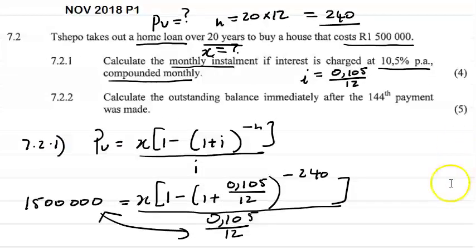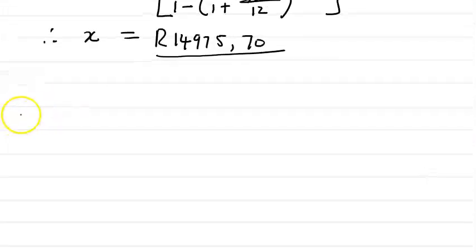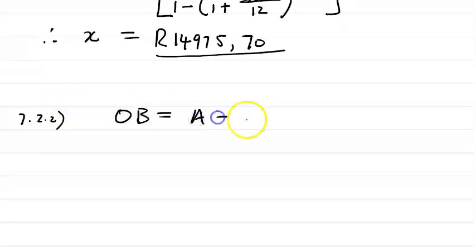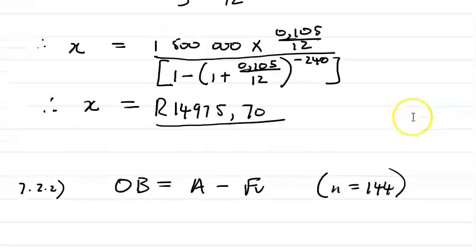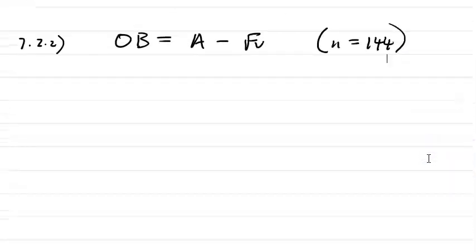The next question says: calculate the outstanding balance immediately after the 144th payment was made. To calculate the outstanding balance on a loan, we use the formula: outstanding balance equals A minus FV, where n equals 144, the number of completed payments. Since it asks immediately after the 144th payment, n equals 144 completed payments.